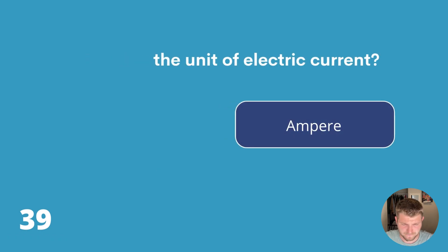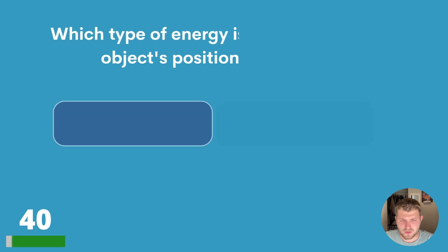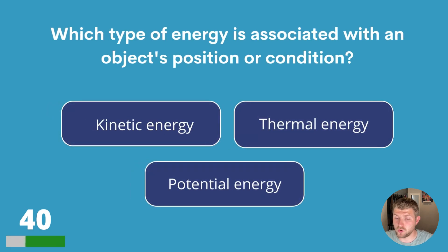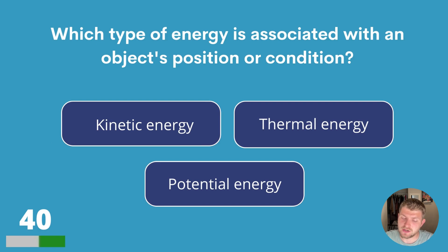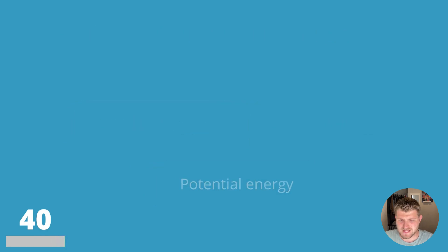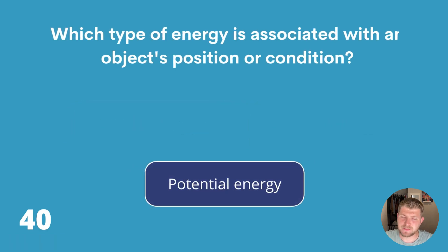Question forty. Which type of energy is associated with an object's position or condition? Kinetic energy, thermal energy or potential energy? The answer is potential energy.